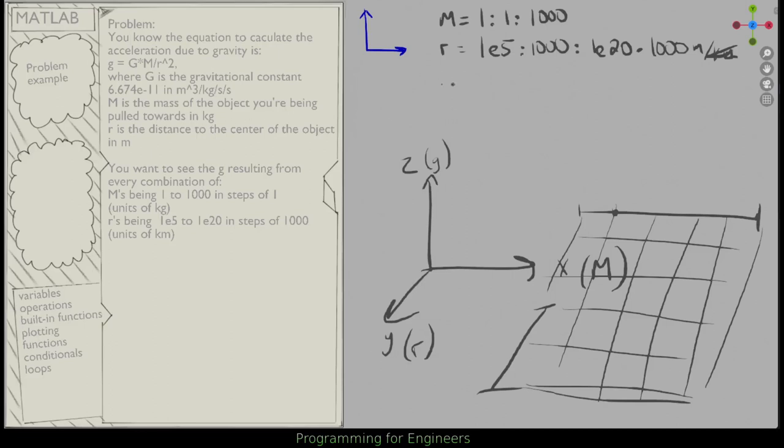So I can use mesh grid here because I know I'm going to need a surface plot like this. I can say m out, r out, equals mesh grid of m, r.